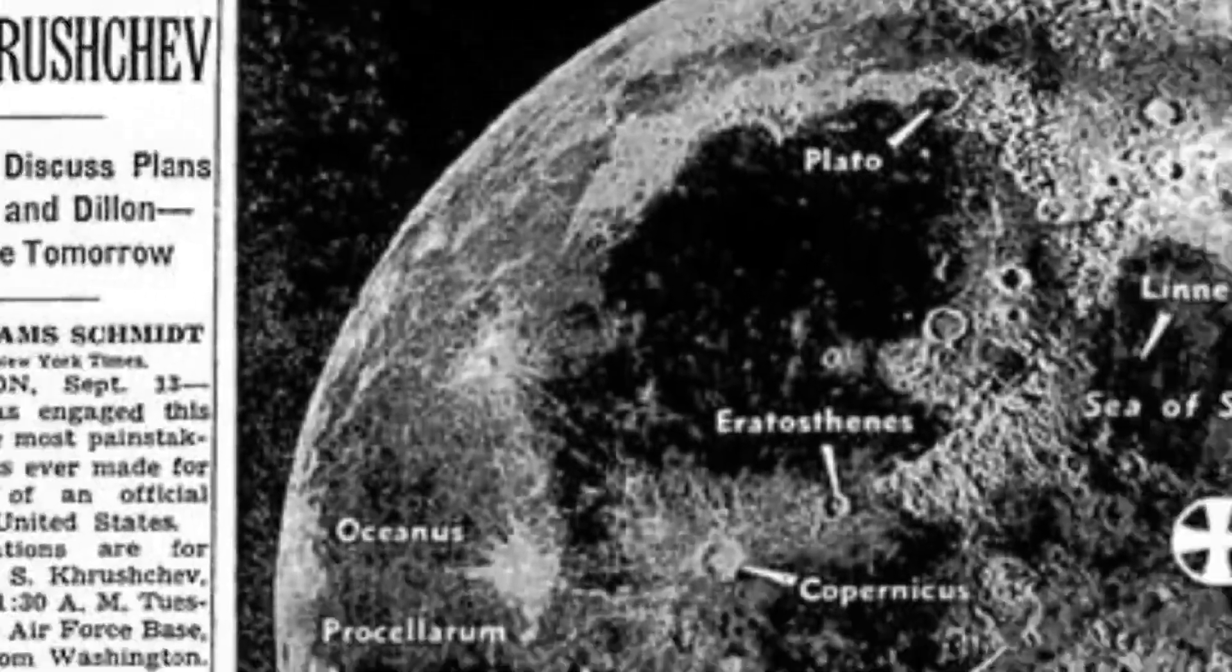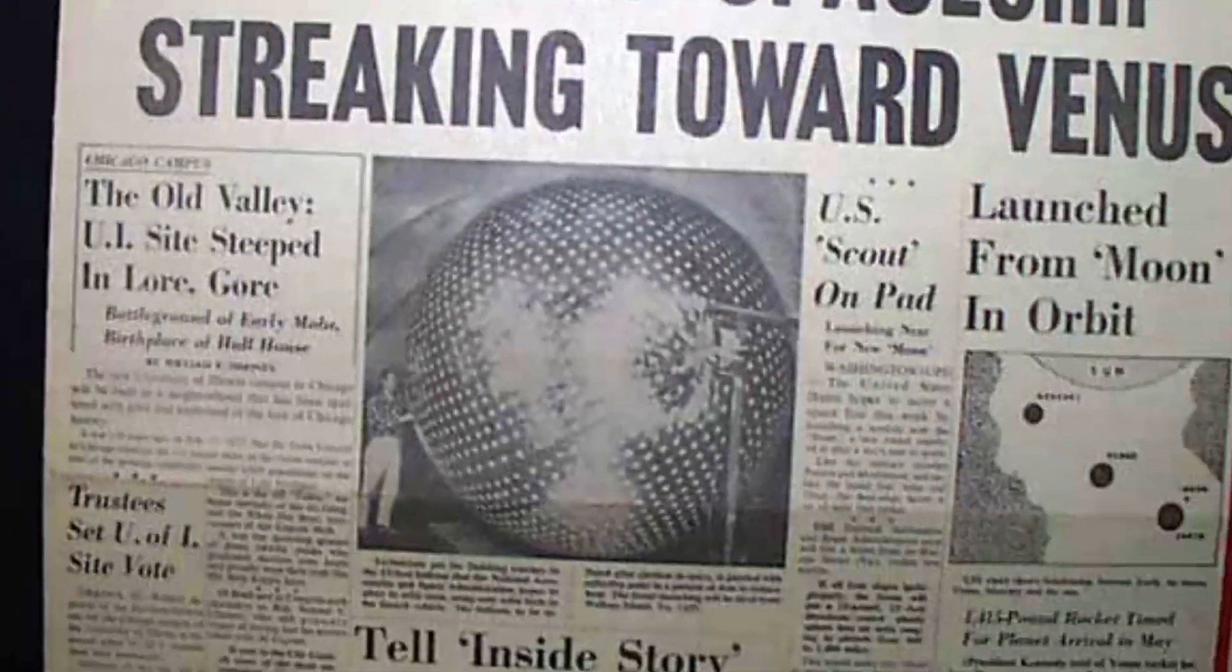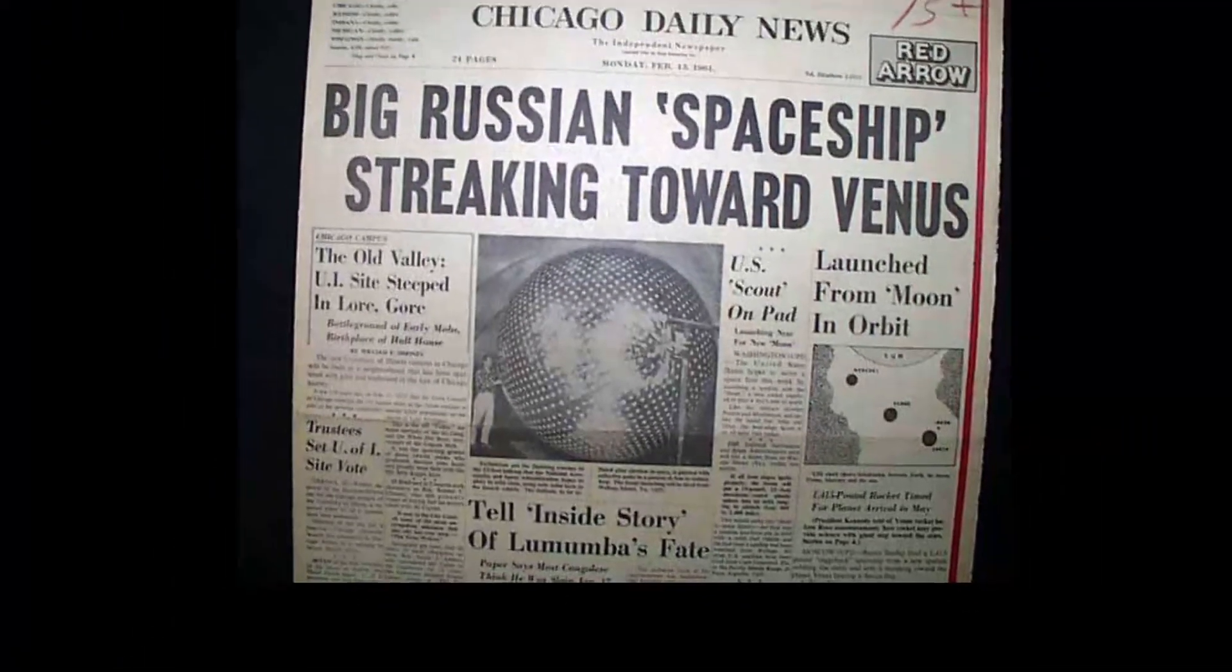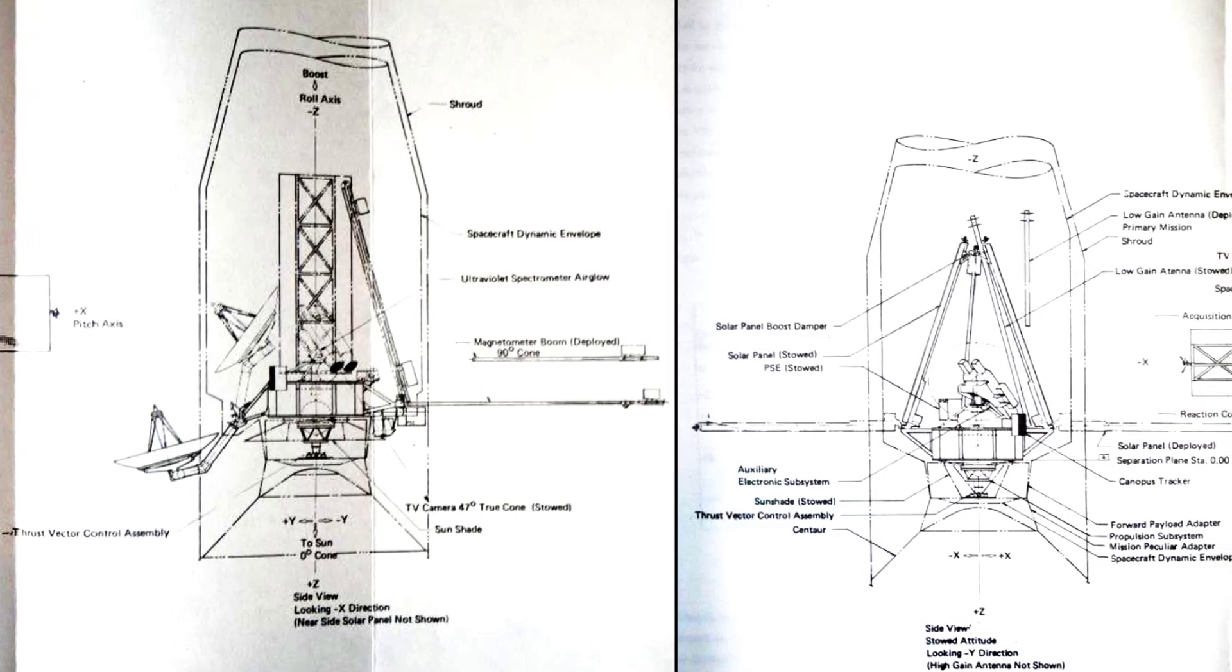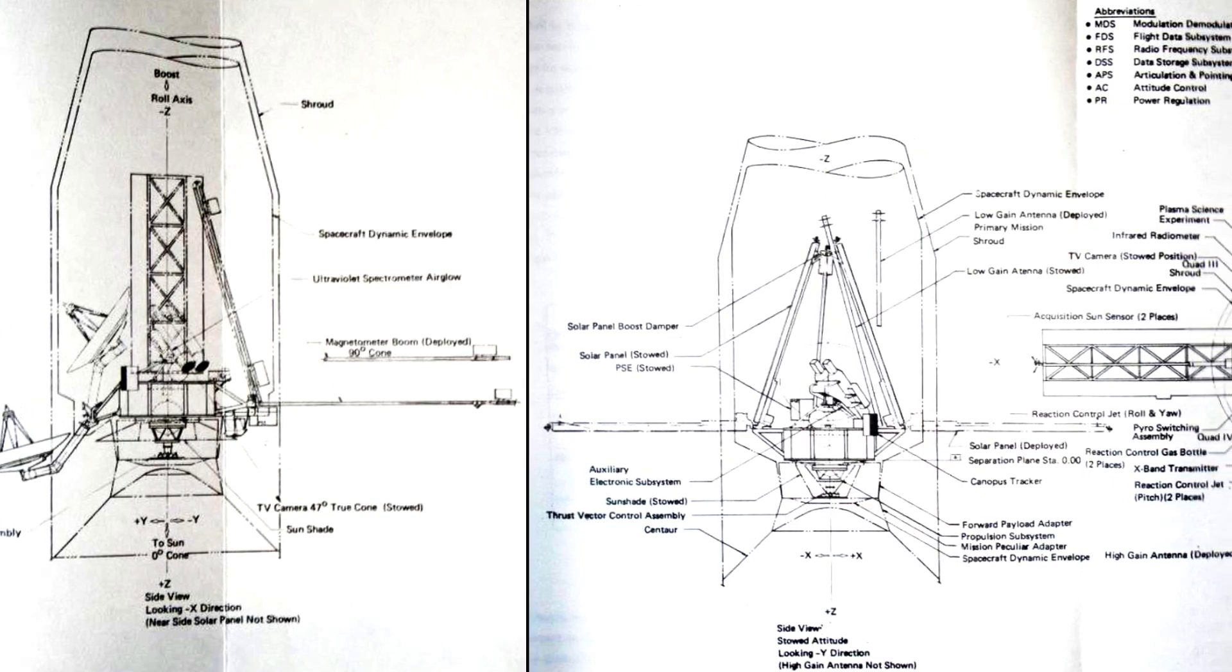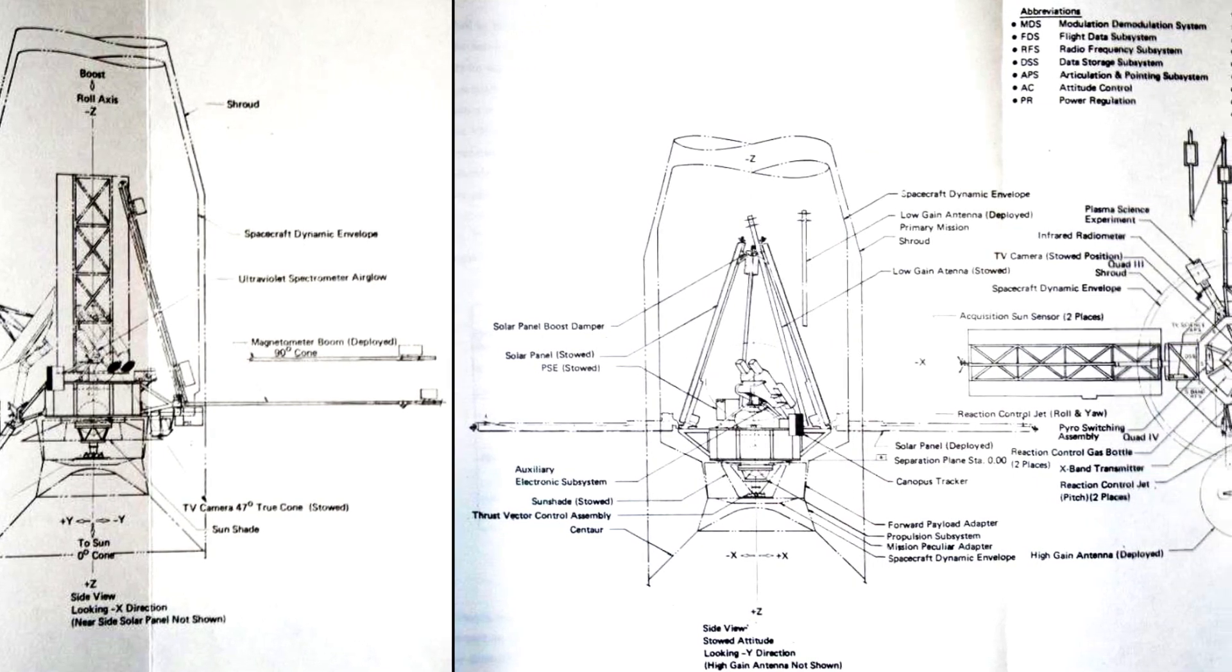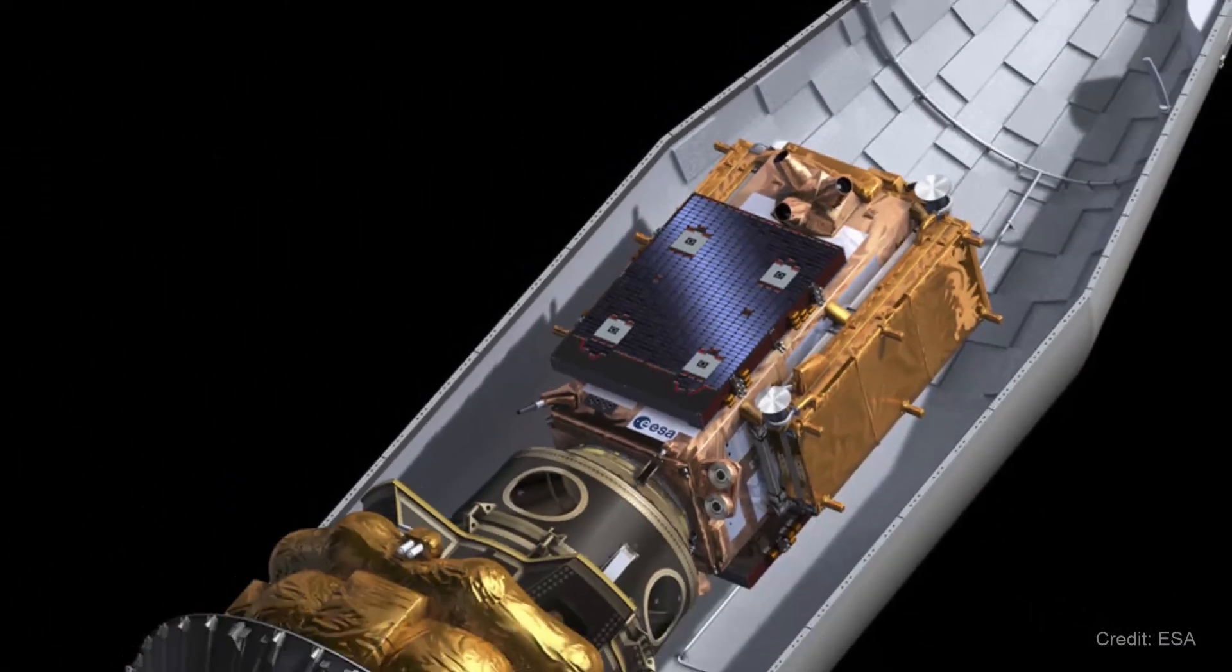But as spacecraft became more capable and embarked on extreme missions, their needs for more scientific instruments, bigger high gain antennas, and solar panels increased. It quickly got to a point where even though the payload was light enough to be carried by a rocket, it couldn't fit inside the rocket's payload fairing. The obvious solution to this was to fold the spacecraft to make it fit inside the fairing.